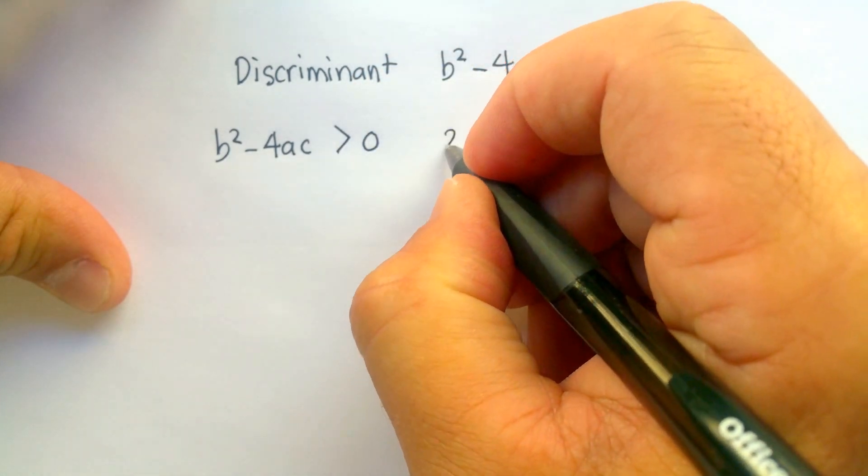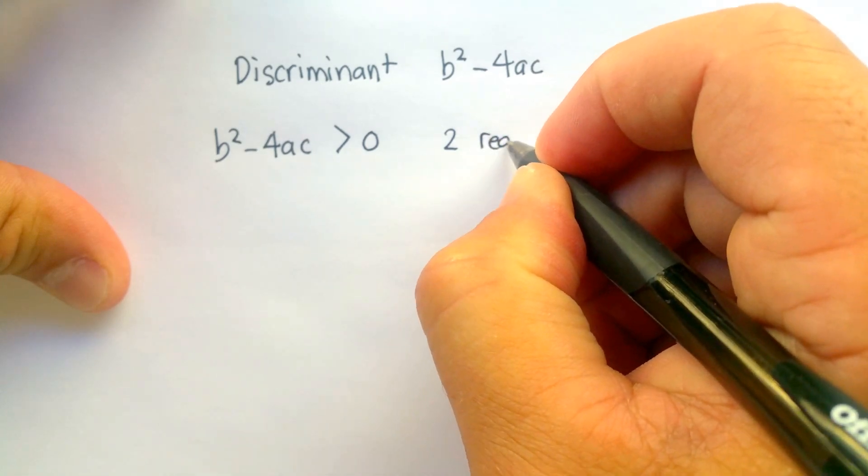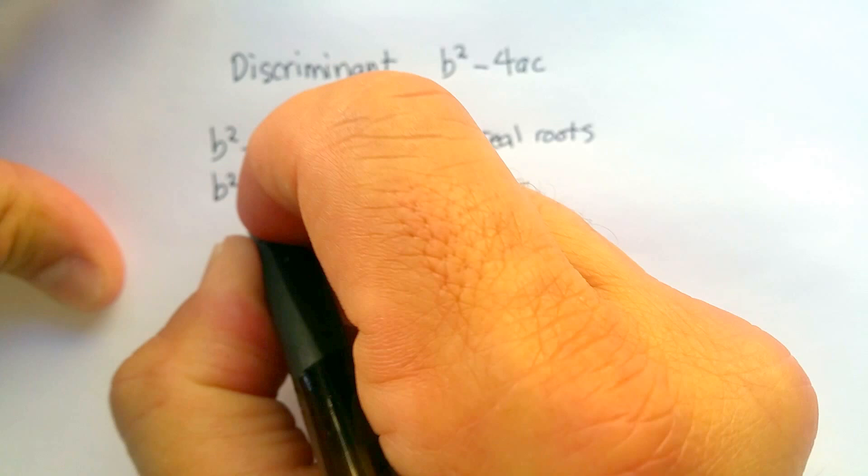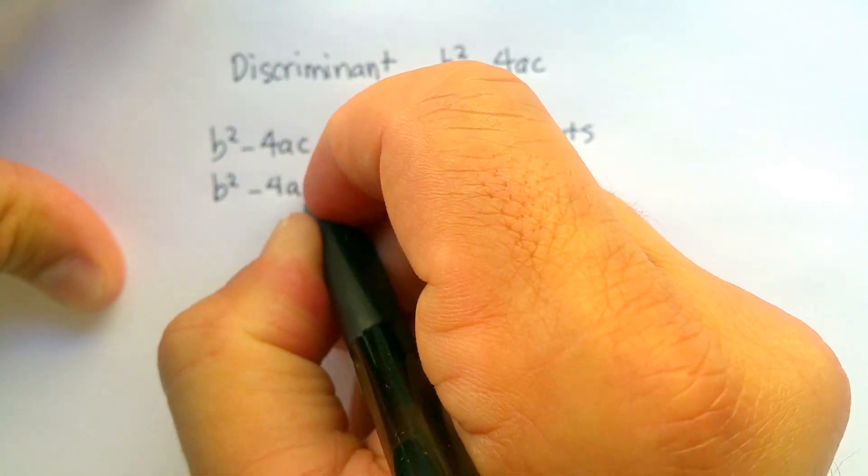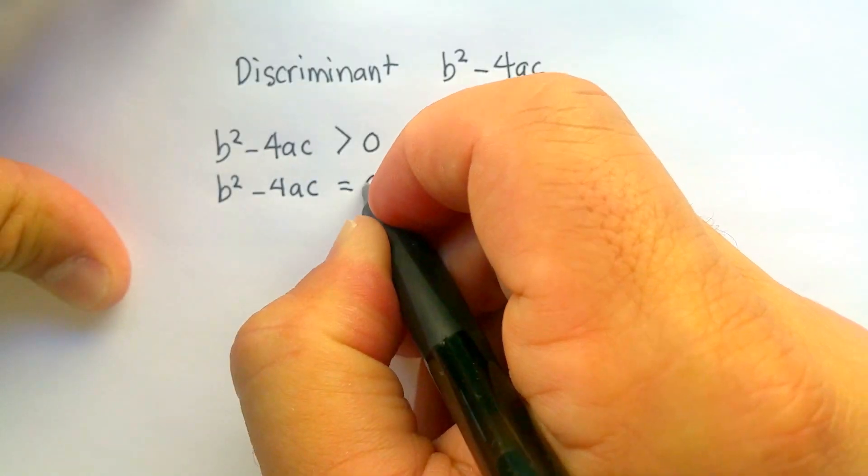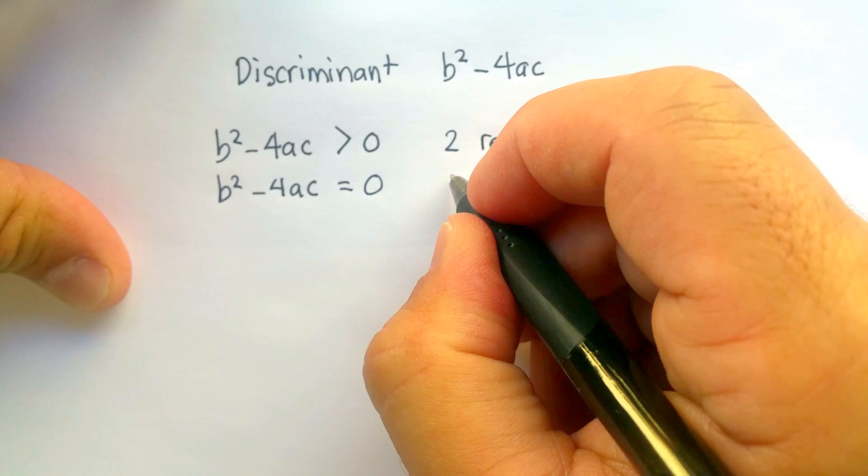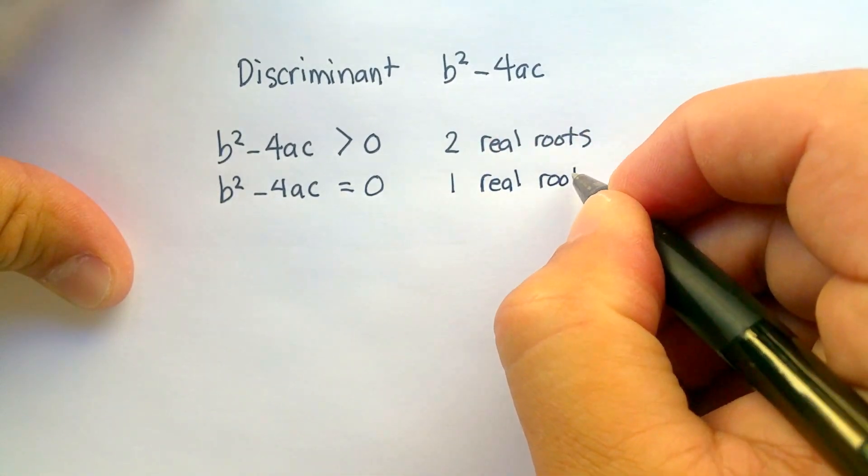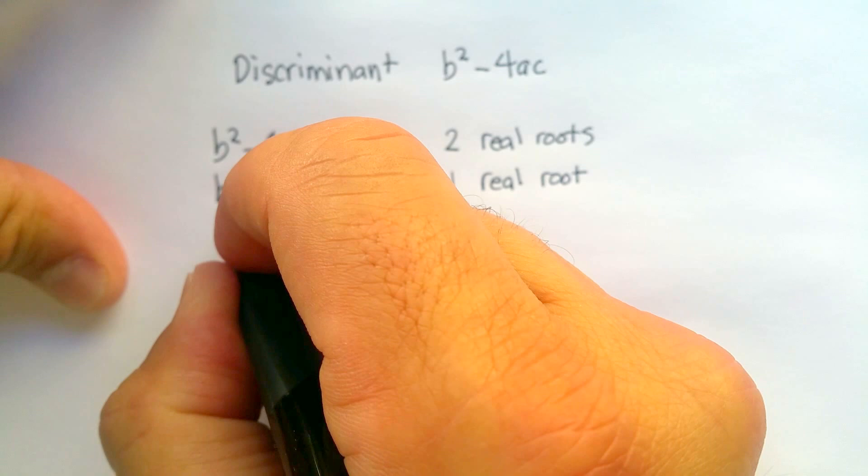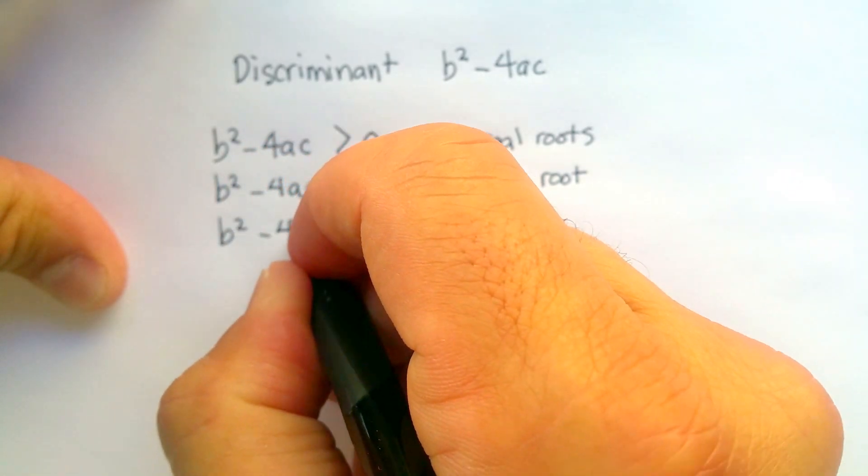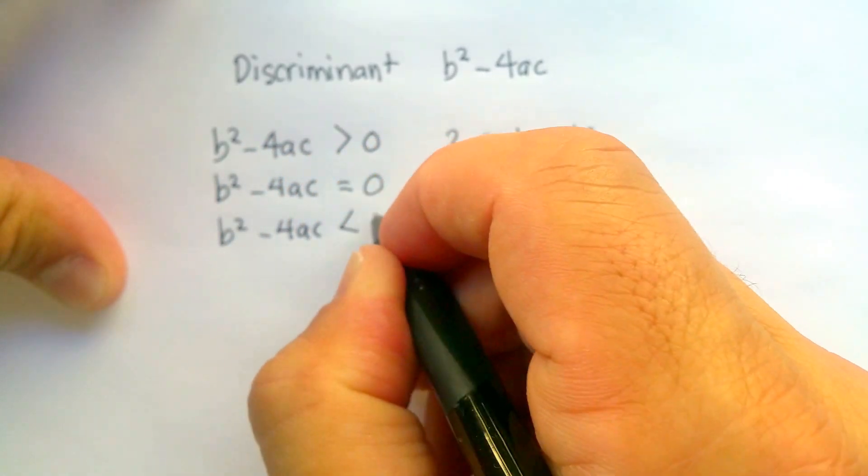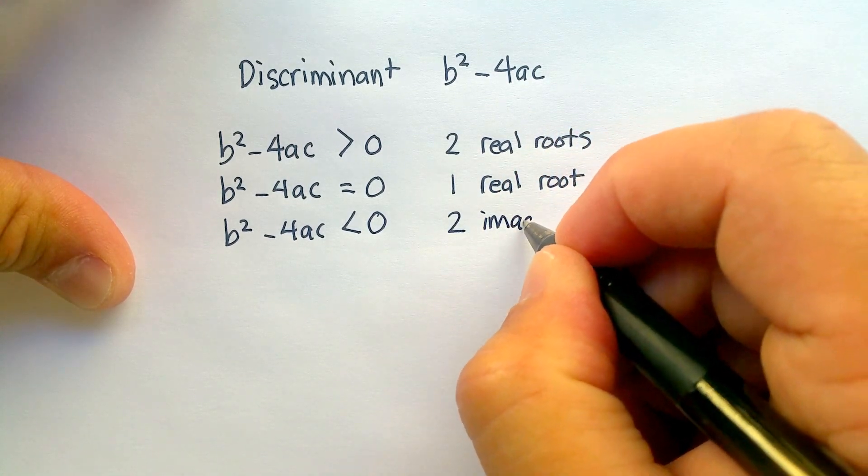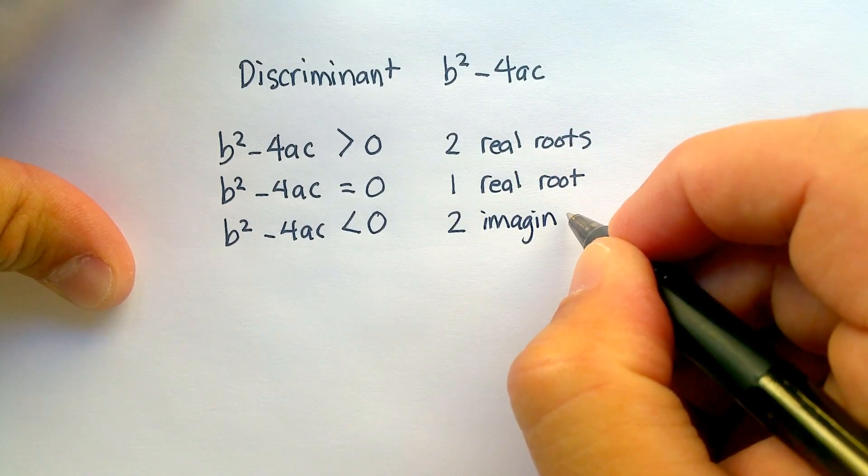When b² - 4ac equals zero, you're going to have one real root. And when b² - 4ac is less than zero, you're going to have two imaginary numbered roots.